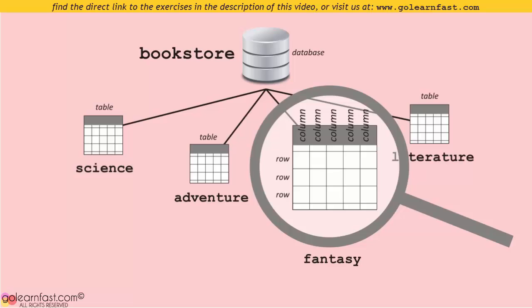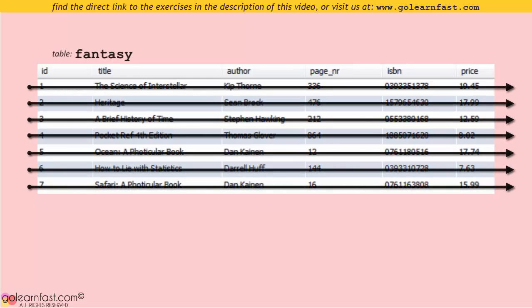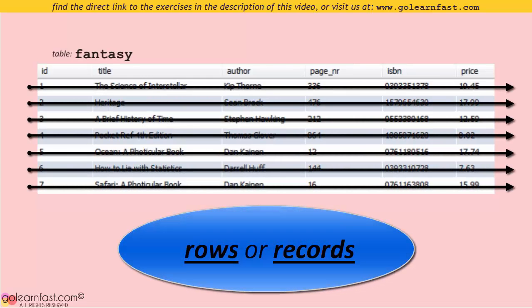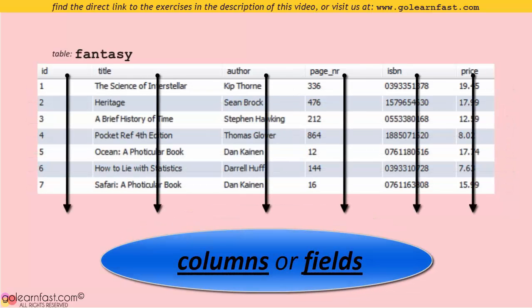Each table can be viewed as a two-dimensional matrix consisting of rows and columns. Let's open the fantasy table and have a closer look at it. This is the fantasy table. These are its rows, also called records. These are its columns, also called fields.